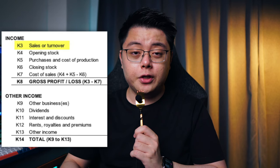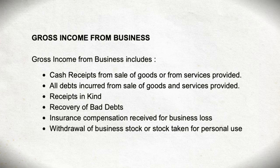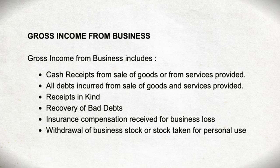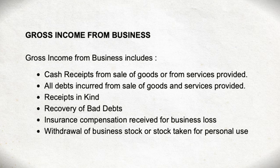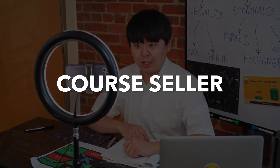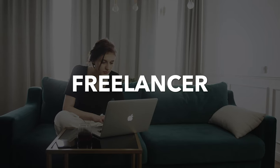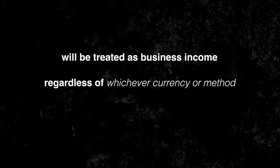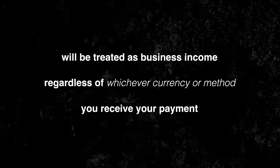The first item we're going to talk about is sales or turnover, which is essentially referring to your business income. According to LHDN's definition, if your income falls under any of these categories, then it can and will be recognised as business income. As long as your business operation is conducted in Malaysia — whether you are a YouTuber, blogger, online seller, software developer, freelancer, cake seller, Shopee seller, or whatever that is — all of that will be treated as business income regardless of whichever currency or method you receive your payment.